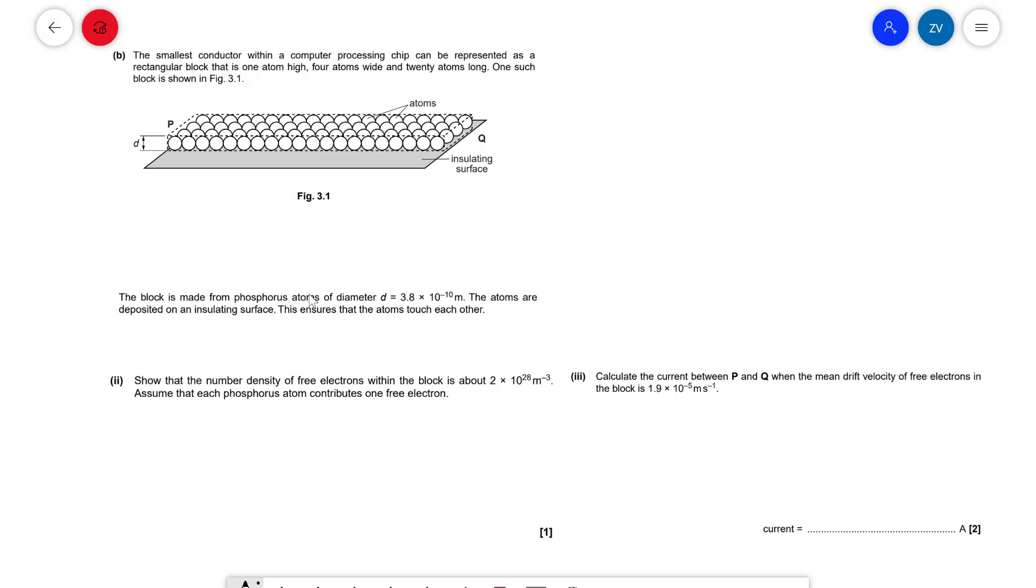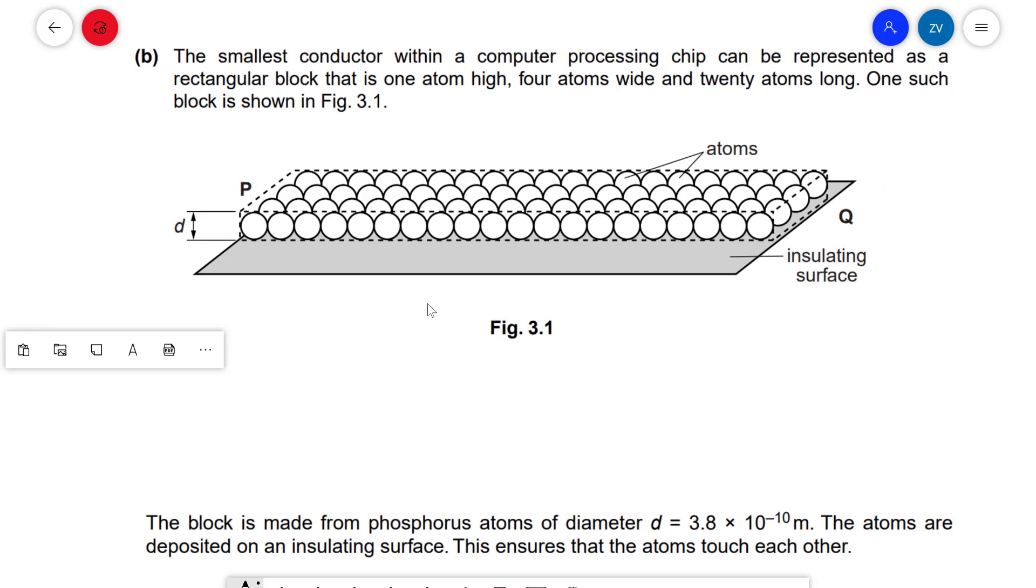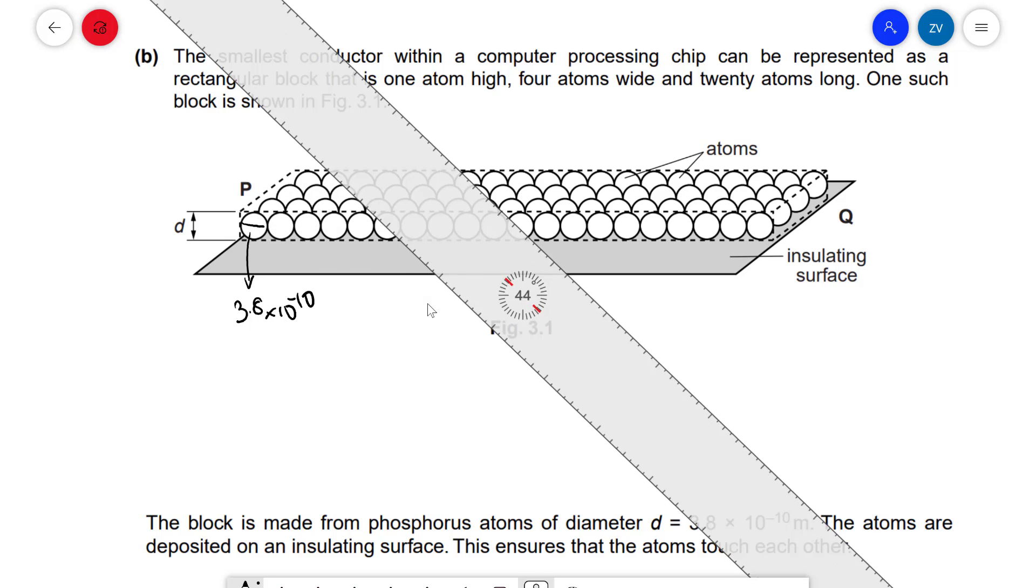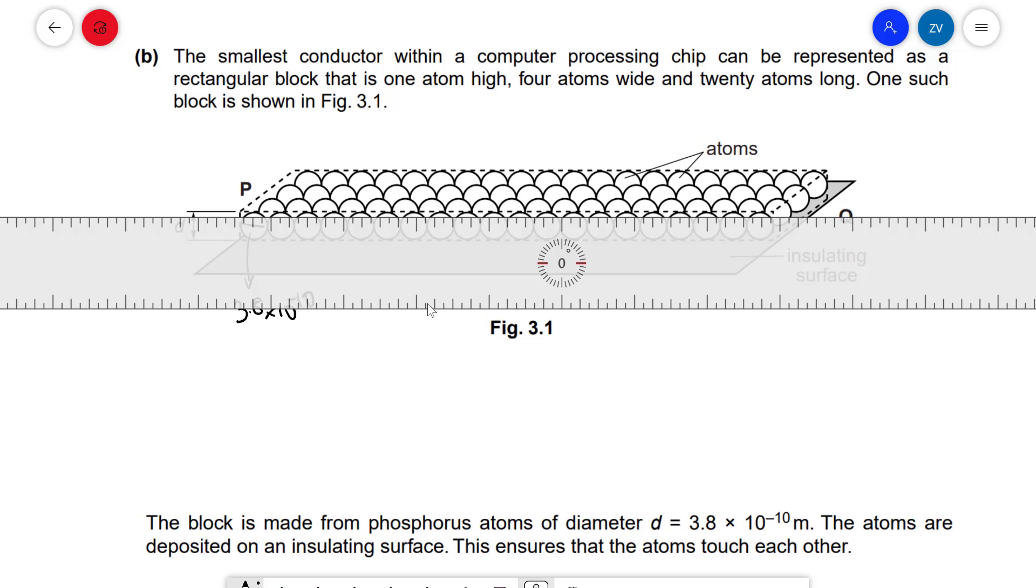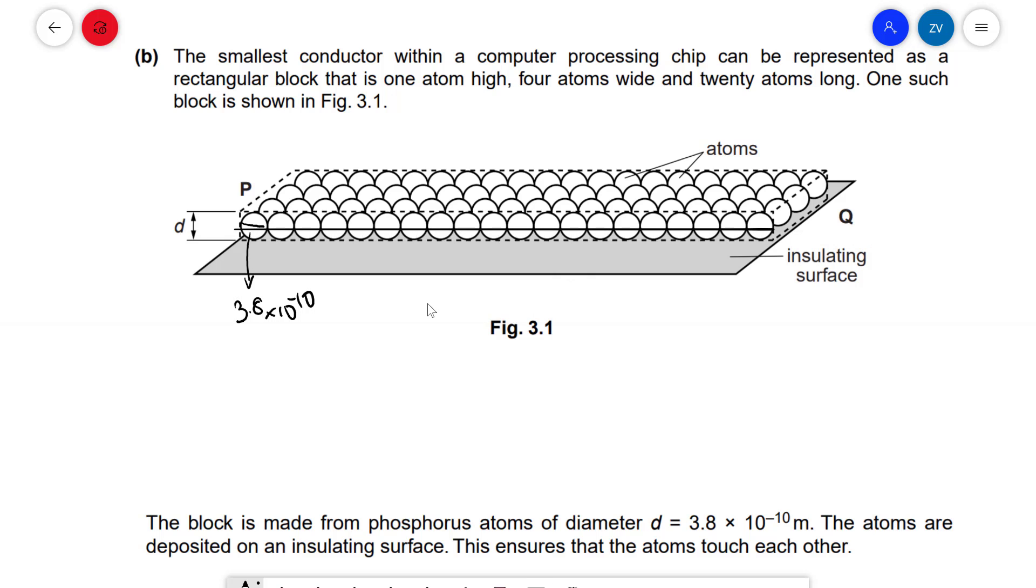The block is made from phosphorus atoms with a diameter of 3.8 × 10⁻¹⁰ m. If you were to zoom in, each of those blocks is going to have a tiny diameter which is 3.8 × 10⁻¹⁰ m. Now what you can actually do is represent this whole length from here to there as essentially the addition of these diameters.